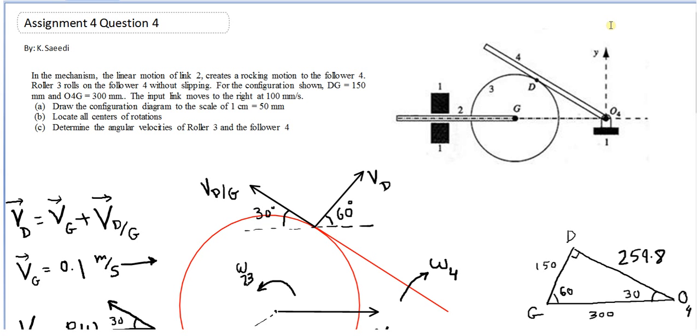For the configuration shown, DG is 150, which is the radius of the disc. O4G is 300 millimeter, the distance between the center of the disc and O4. The input link number 2 moves to the right at 100 millimeter per second.